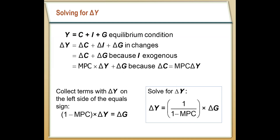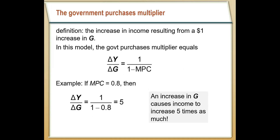As long as people's marginal propensity to consume is greater than zero but less than one, our total increase in income is going to be greater than our total increase in government spending — ΔY is going to be greater than ΔG. We call this the government spending multiplier, or government purchases multiplier. The ratio between the two is ΔY over ΔG equals one over one minus MPC.